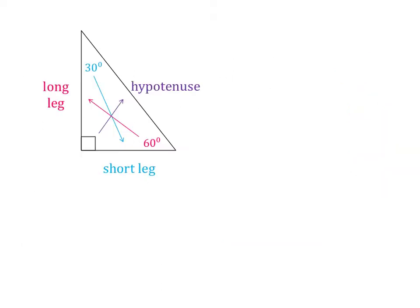Now let's talk about the right triangle we were focusing on — one half of the equilateral triangle. The smallest angle is going to be across from the smallest side, so the 30-degree angle is across from the short leg. The 60-degree angle is across from the long leg, and the 90-degree angle is across from the hypotenuse. The hypotenuse is always the longest side.